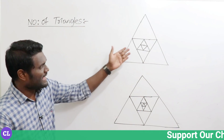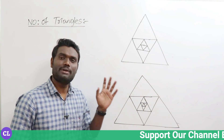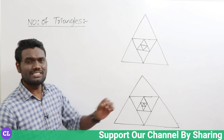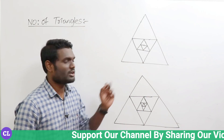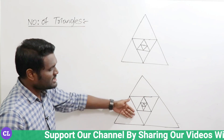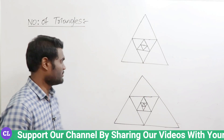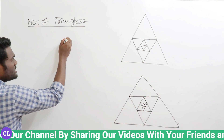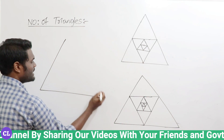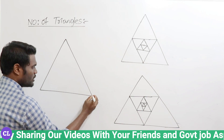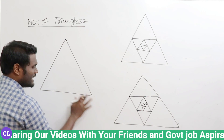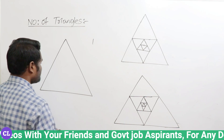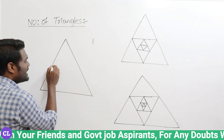We have two figures and you say how many triangles are there. I will show you a simple short technique so you can mark the answer in just two seconds of time. Observe here carefully — how many triangles are there in this figure? If you look here, you have a total of one triangle in this figure.